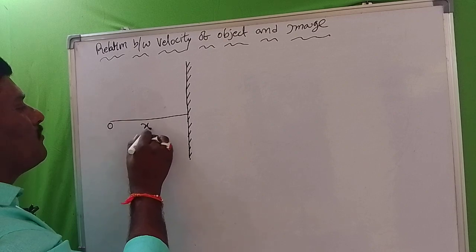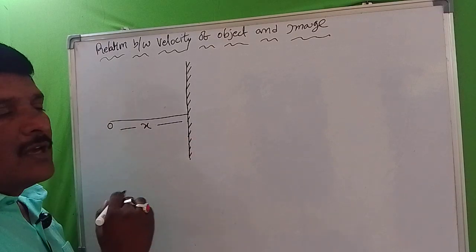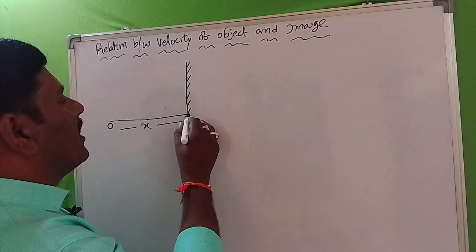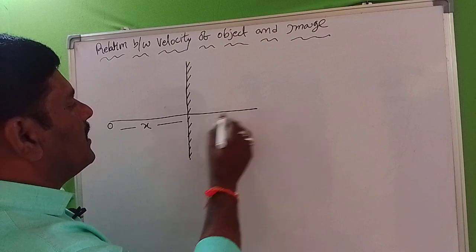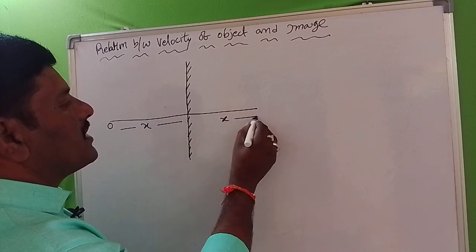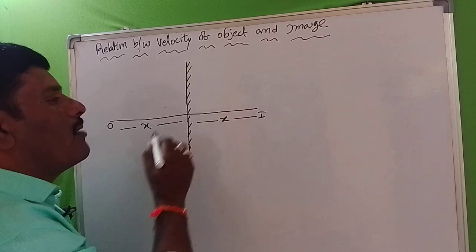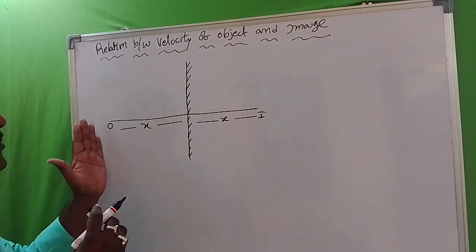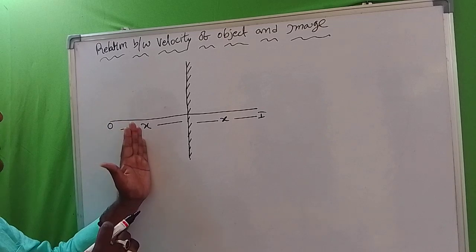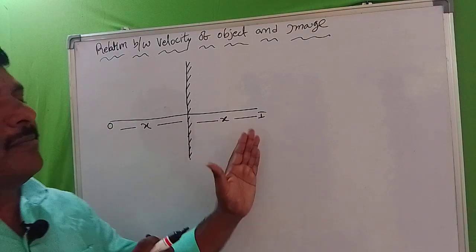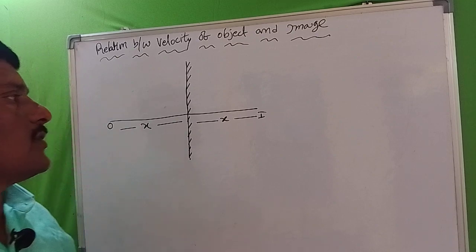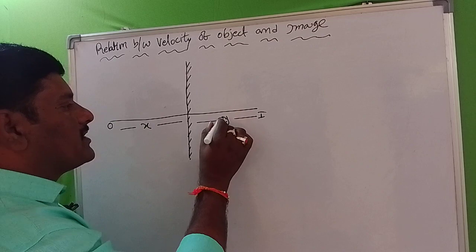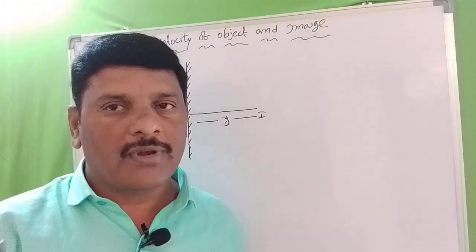We consider the object at some distance x from the plane mirror. If we look at the plane mirror, the image is formed behind the plane mirror at the same distance x. So if we indicate the positions of object and image, x is equal to y — this is the position of the object in the plane mirror numerically.